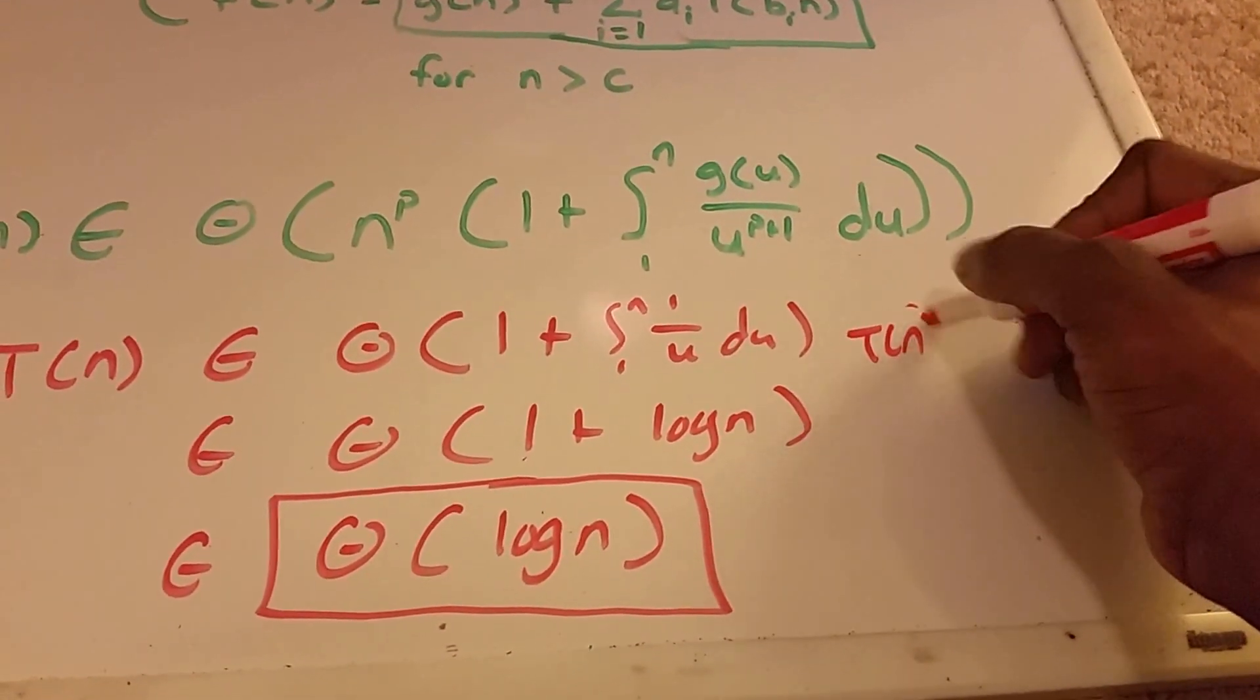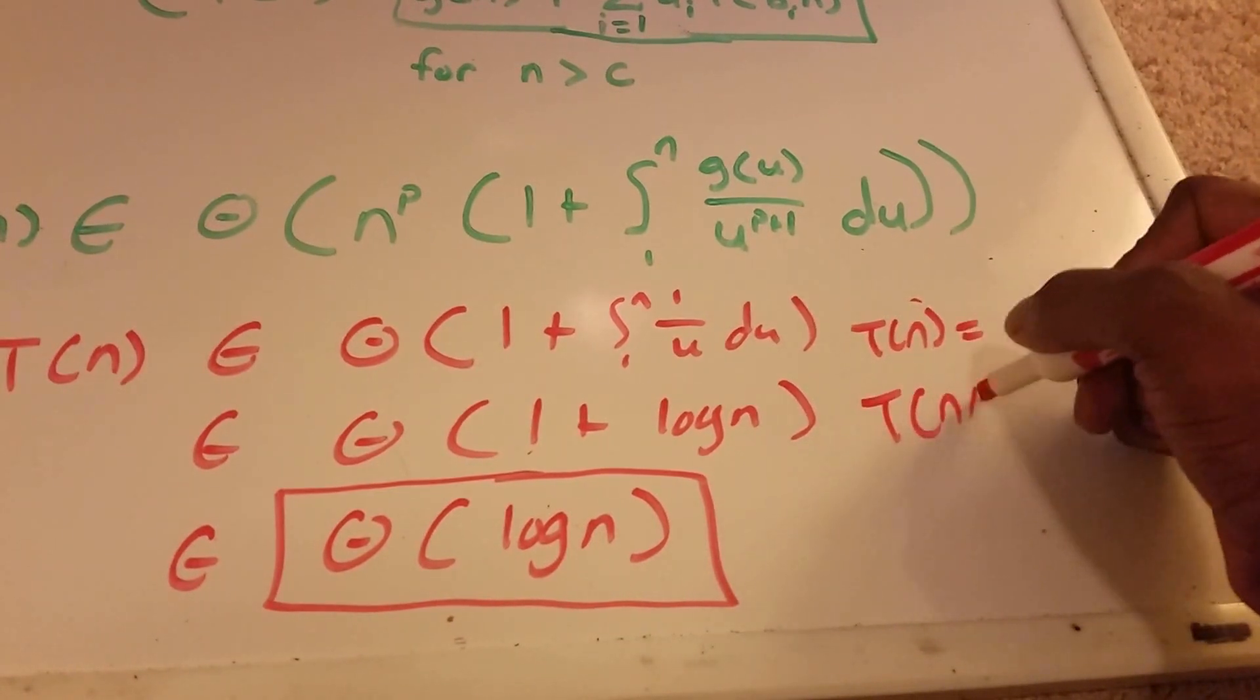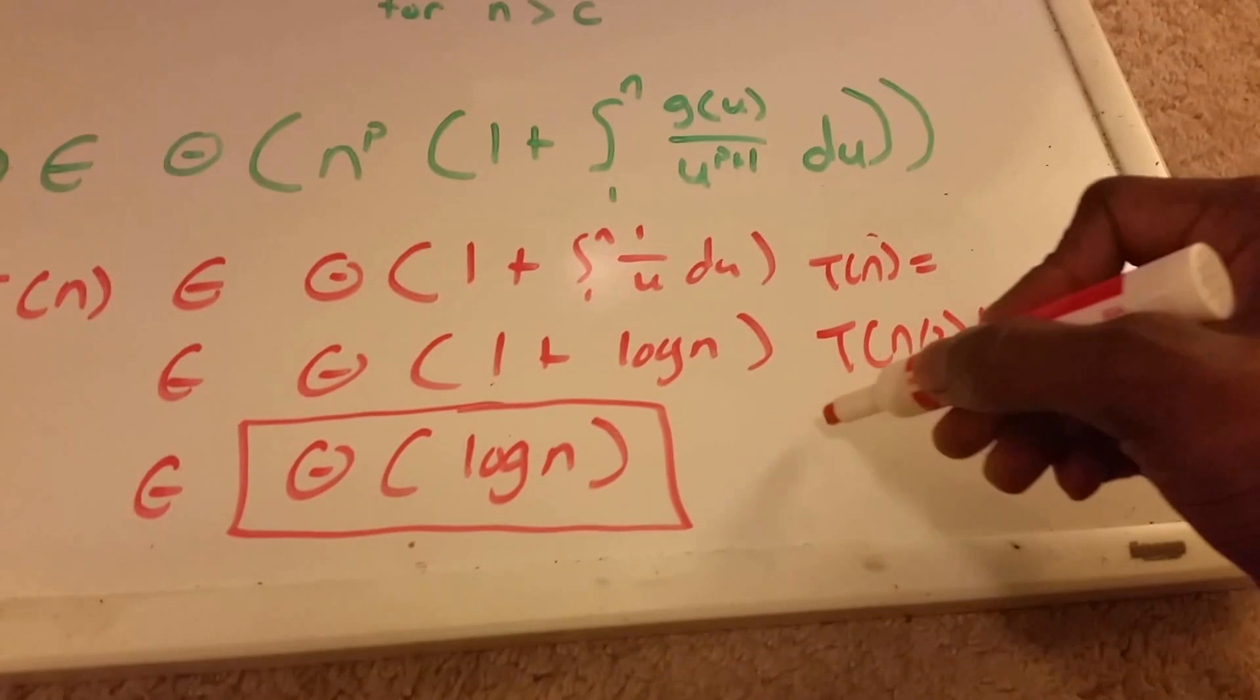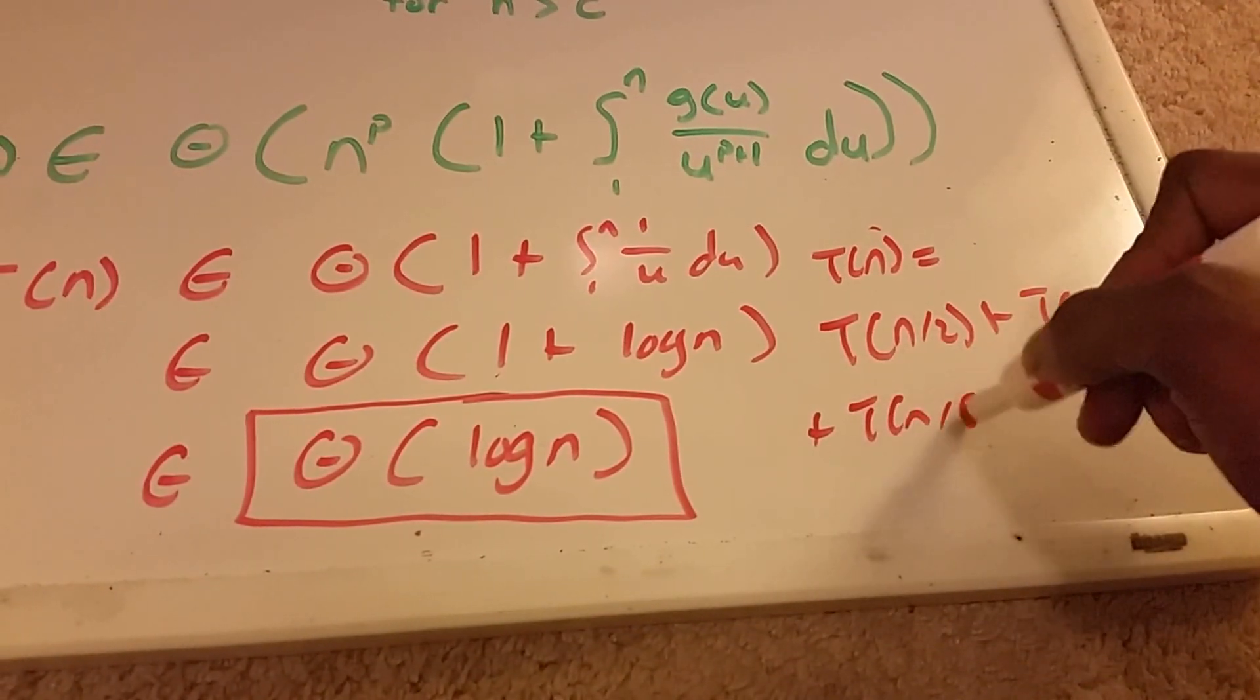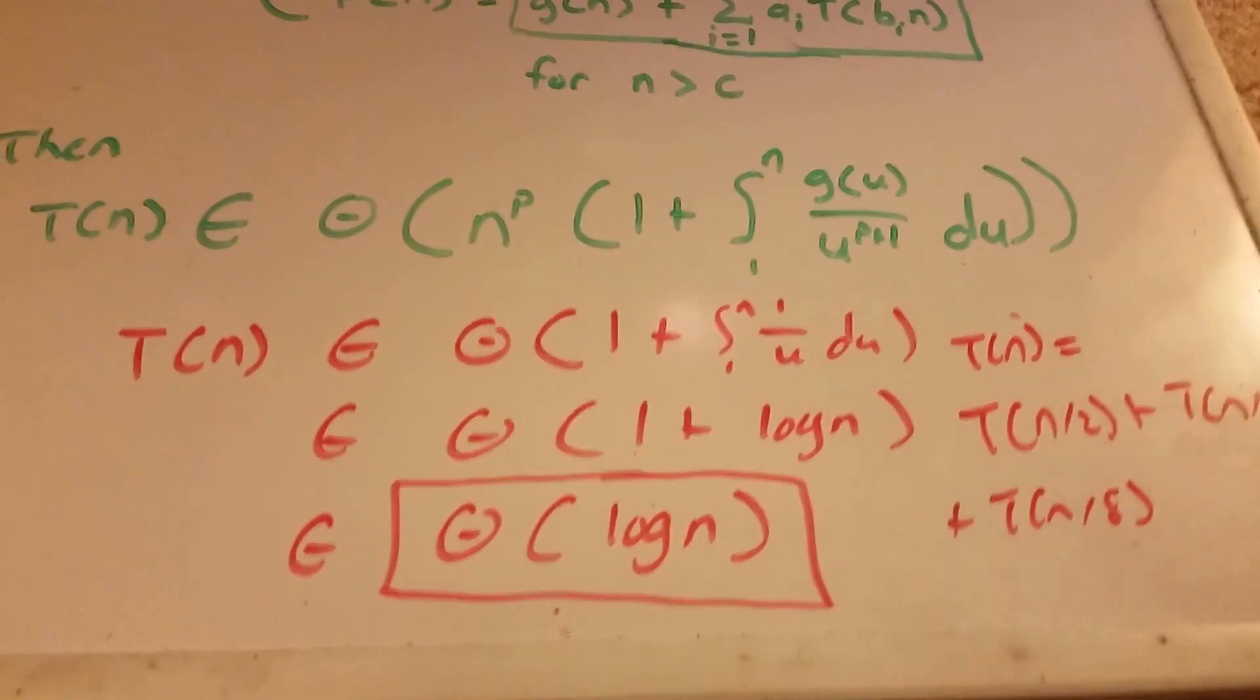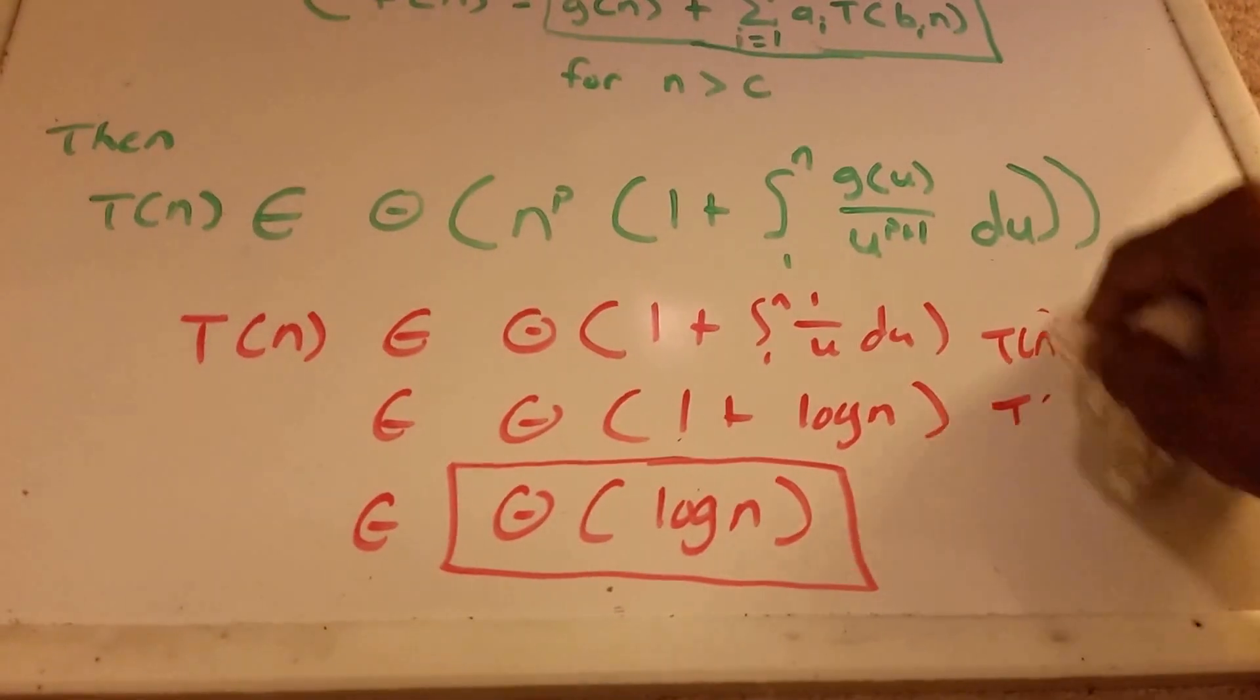The master theorem can't do recurrences like T of n equal T of n divided by 2 plus T of n divided by 3 plus T of n divided by 8. You can't solve recurrences using a master theorem if they're like that. But you can do that using the Akra-Bazzi method.